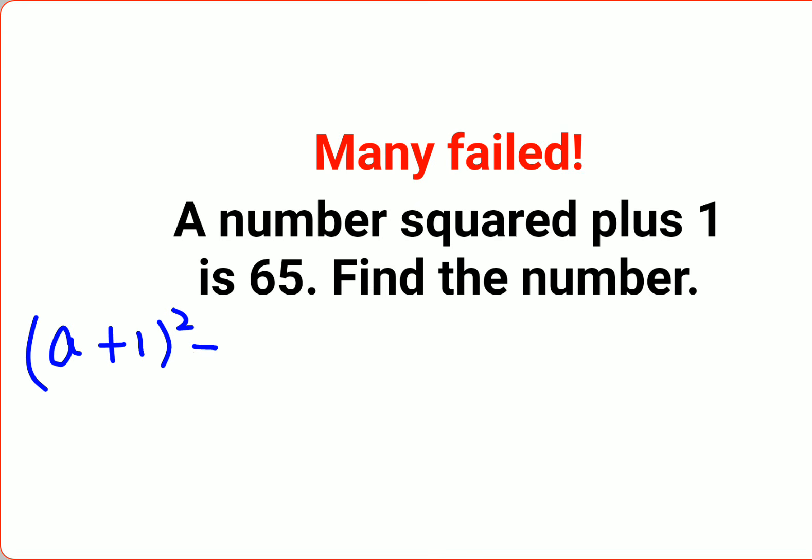Because they are telling you a number is squared. So it is a squared plus 1 equals 65. This is what they are trying to tell you. If you had misinterpreted this way, that is why a lot of people got it wrong.